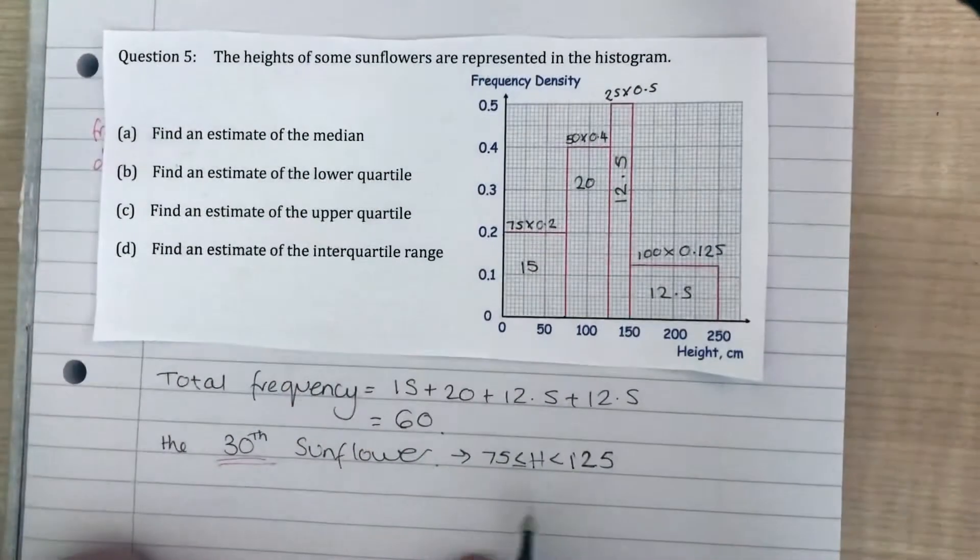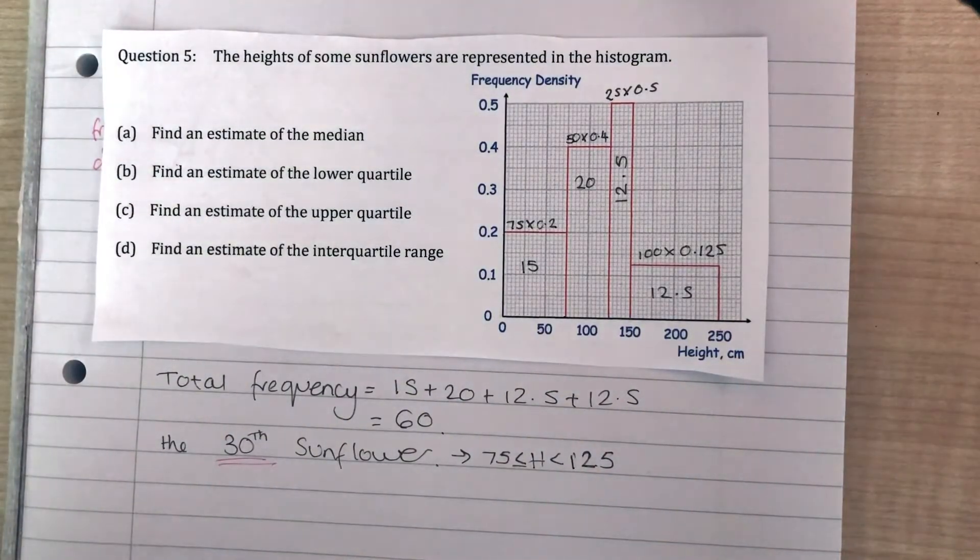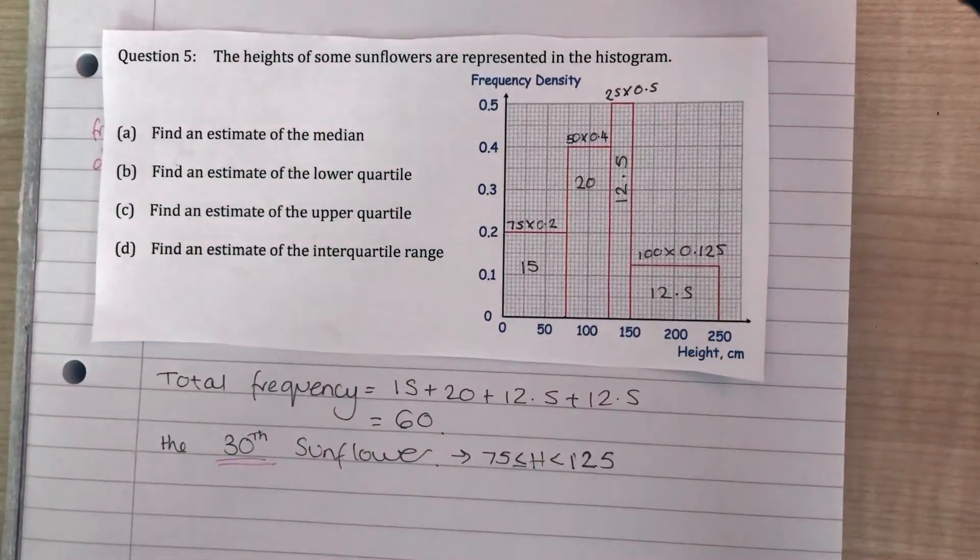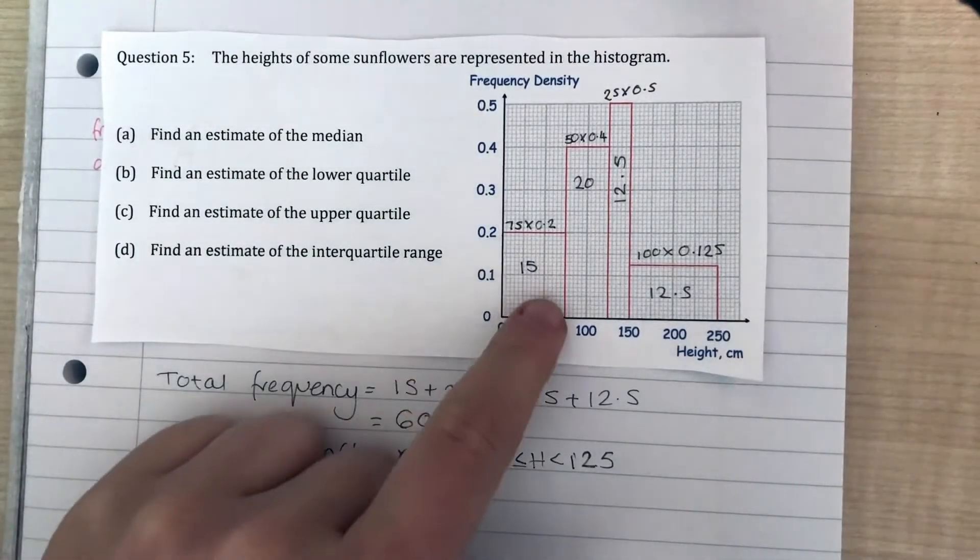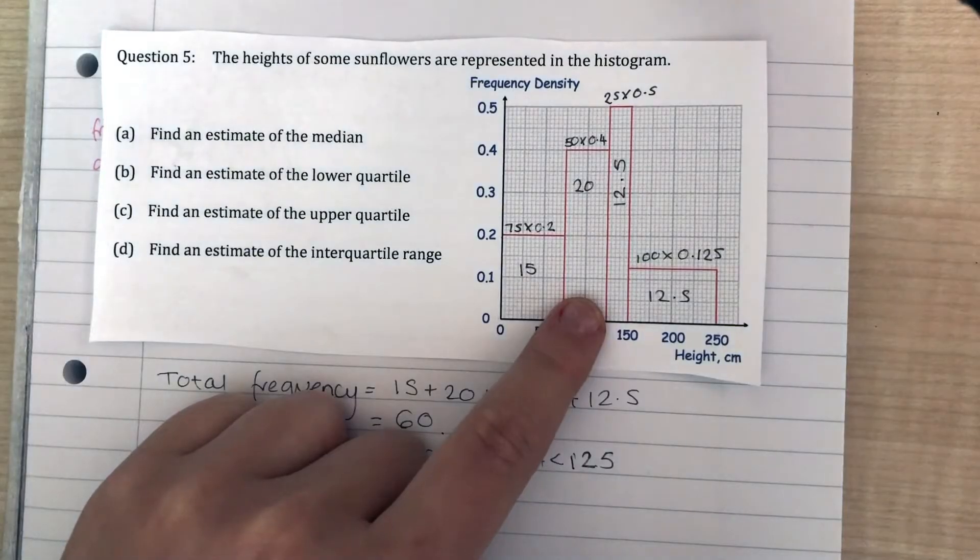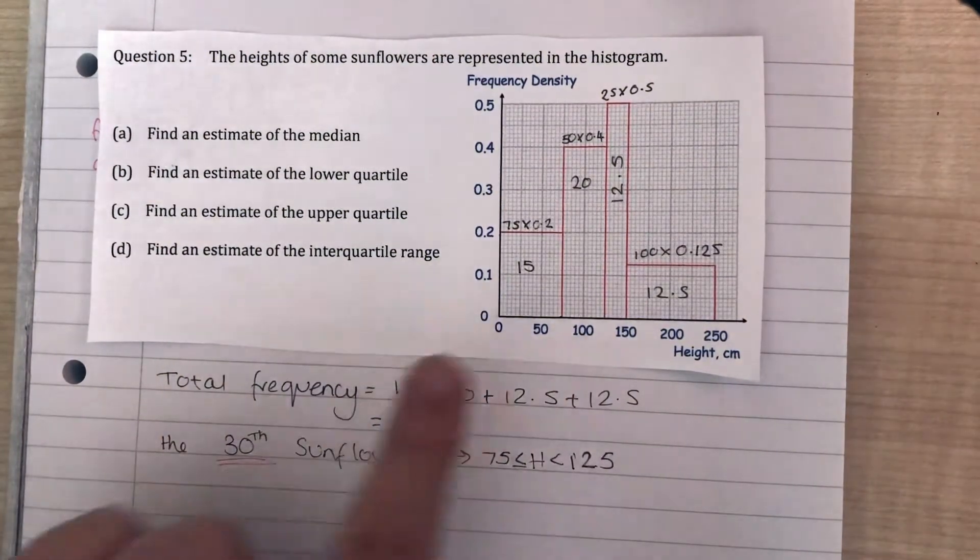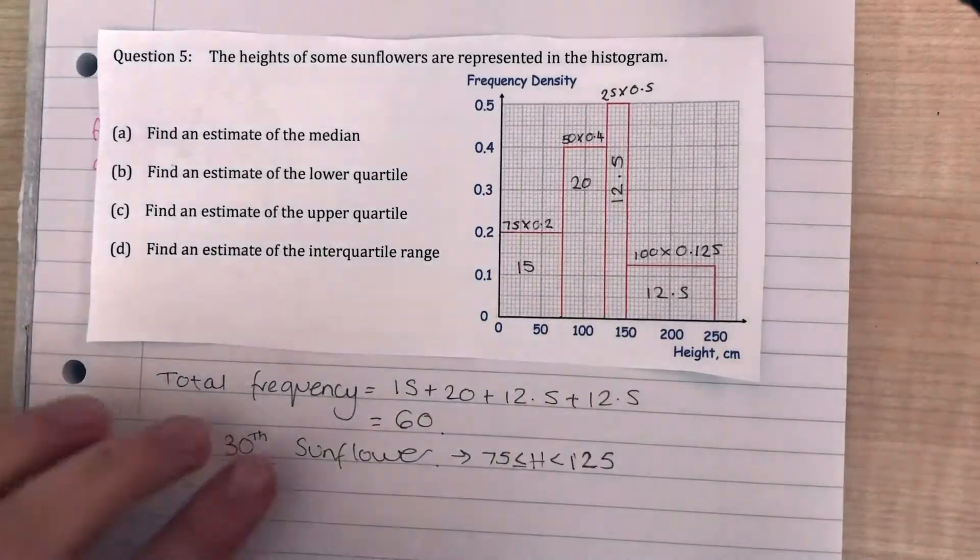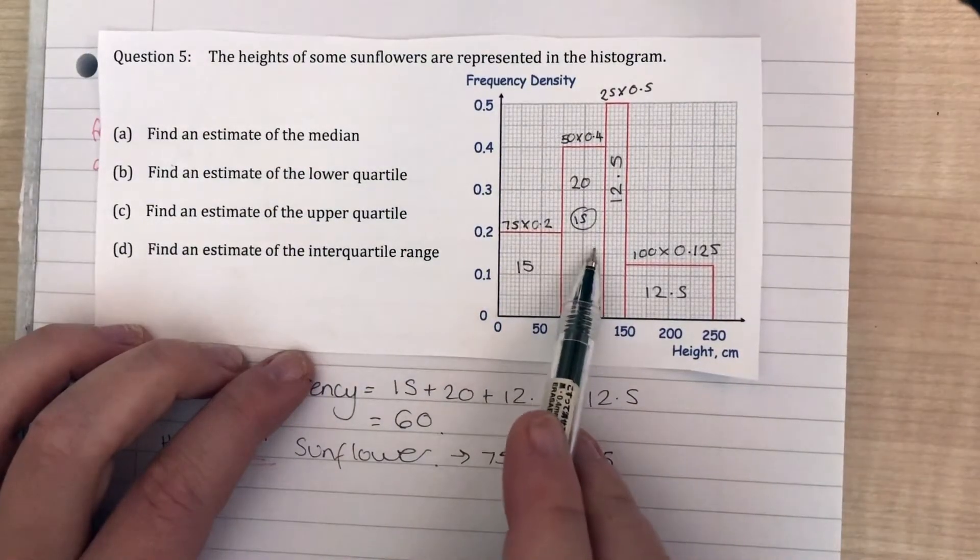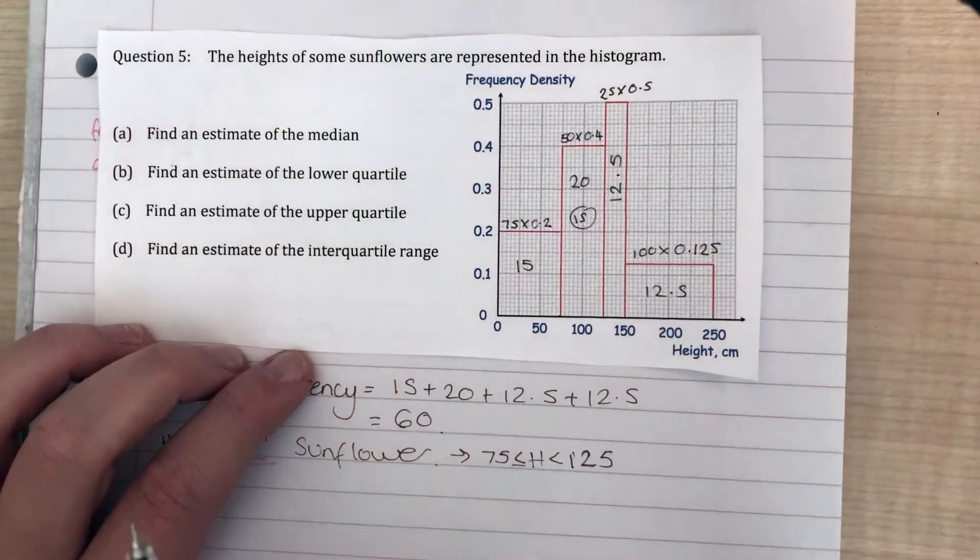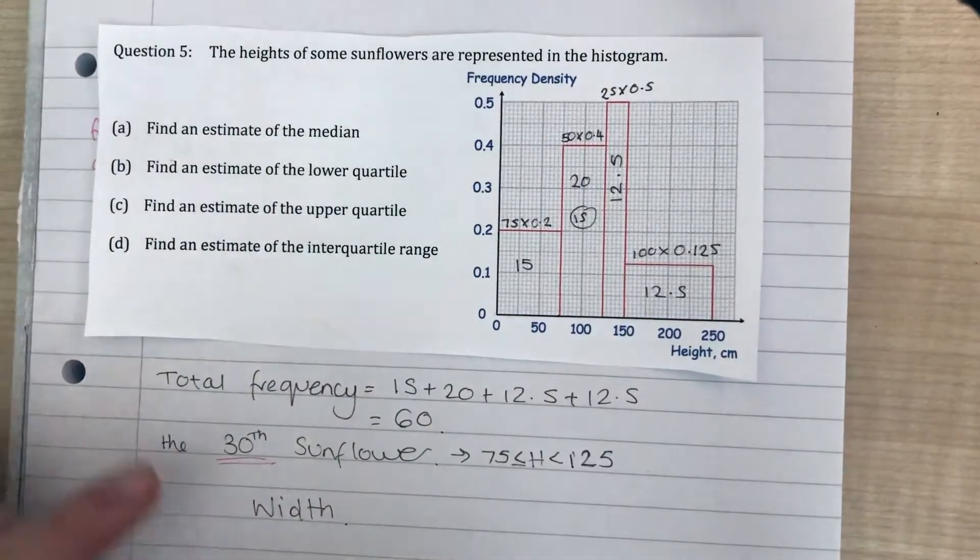We already know it's going to be in the range of 75 to 125 centimeters. However, that's not enough. We actually need to work out a proper estimate for the median. I need to work out just how far into this bar that 30th sunflower lies. If that's 15, I need to get up to 30, I need to count in 15 more in here. But I need to work out how wide that would take it. How far into this bar is the 15th flower?